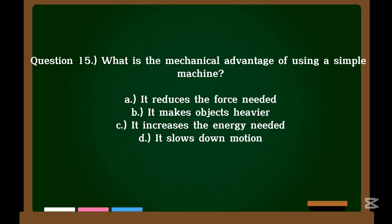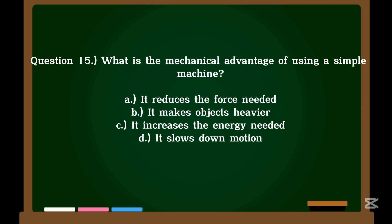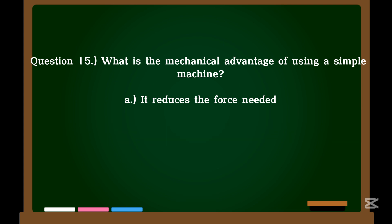Question 15. What is the mechanical advantage of using a simple machine? A. It reduces the force needed. B. It makes objects heavier. C. It increases the energy needed. D. It slows down motion. Correct answer: A. It reduces the force needed.